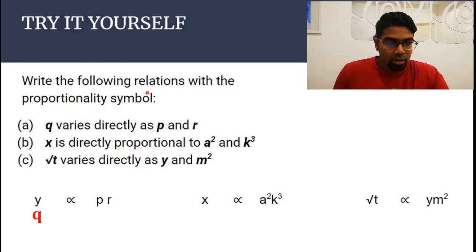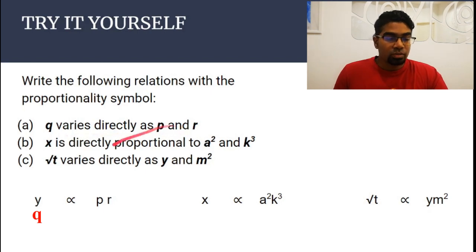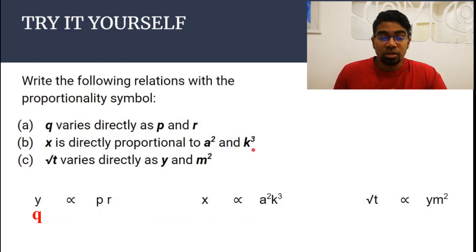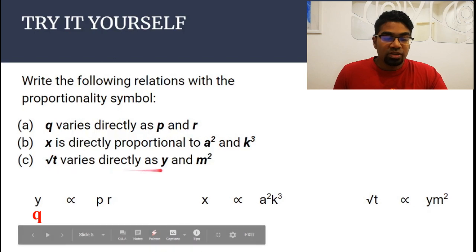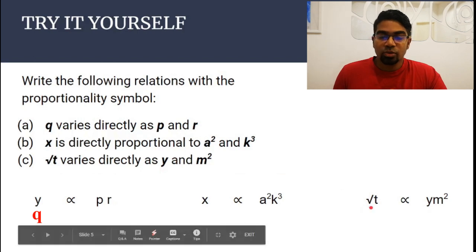Let's try this. Write the following relations with the proportionality symbol. (a) q varies directly as p and r — so we write q is proportional to p times r. (b) x is directly proportional to a squared and k cubed — so we write x is proportional to a squared multiplied by k cubed. (c) Square root of t varies directly as y and m squared — so we write square root of t is proportional to y multiplied by m squared.